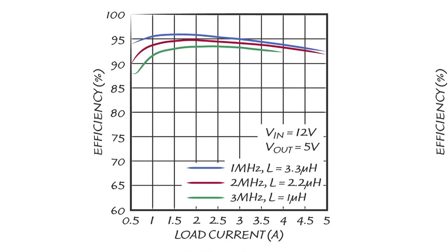Switching at 2 megahertz delivers almost 95% efficiency and even at 3 megahertz switching, the LT8640 delivers peak efficiency of just under 94%.